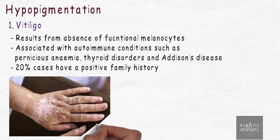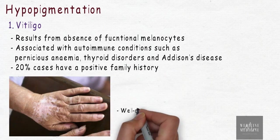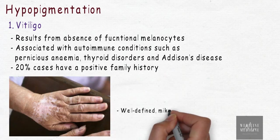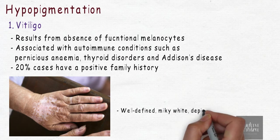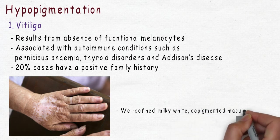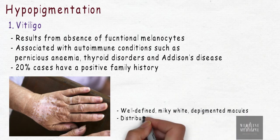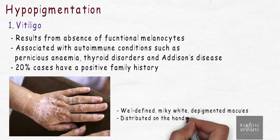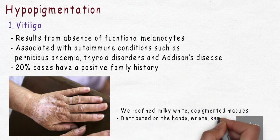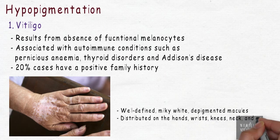The characteristic lesion of vitiligo presents with well-defined milky white depigmented macules, which are often distributed on areas of the hands, wrist, knees, neck, and mouth.